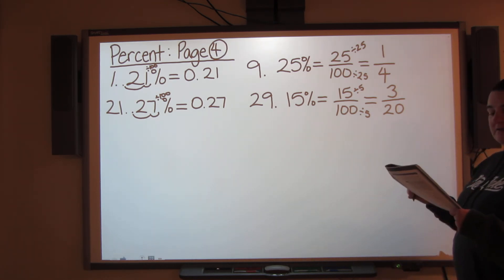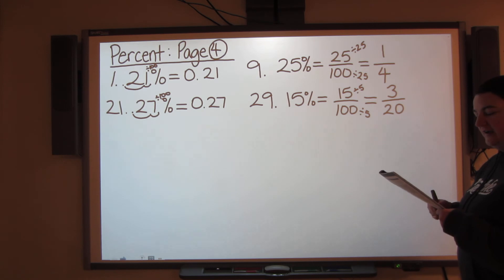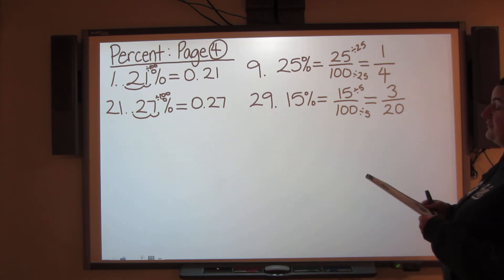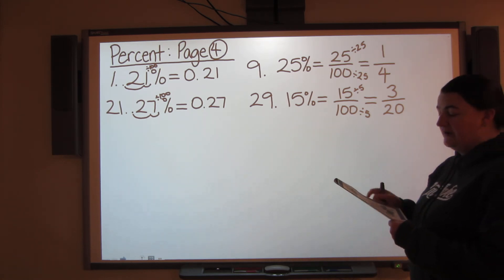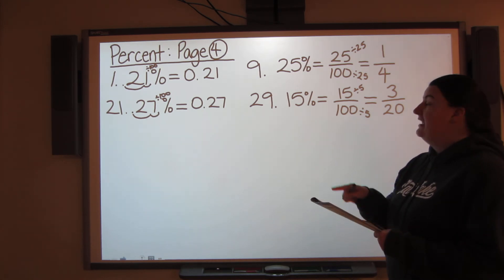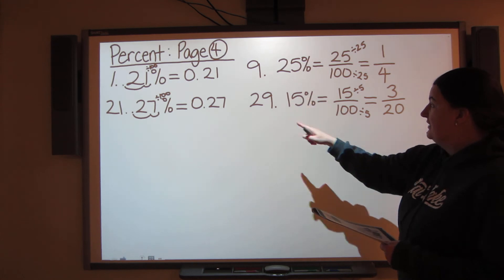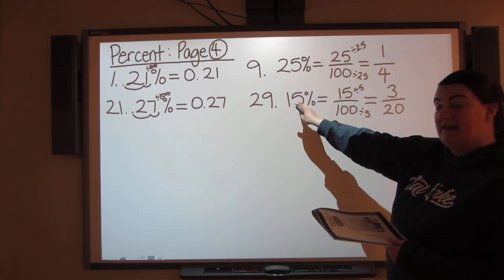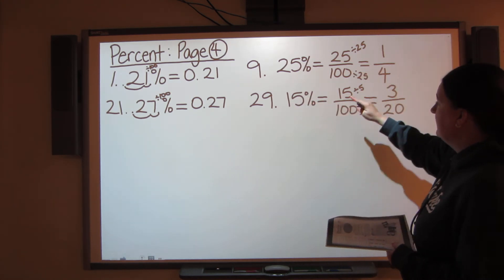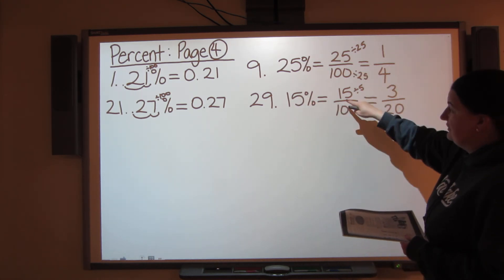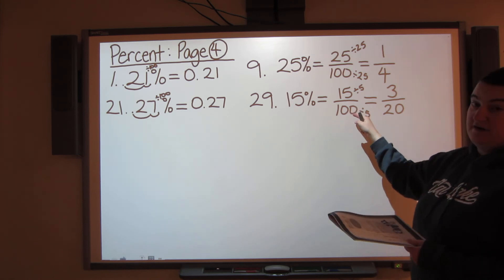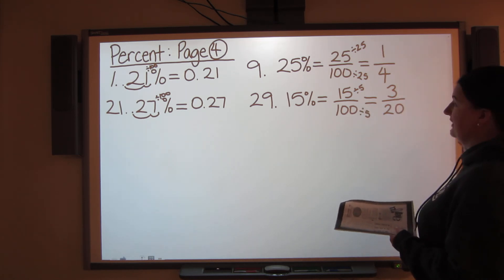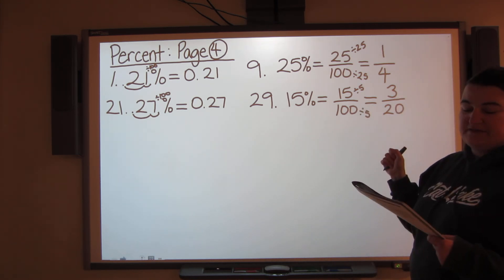So from number 29 all the way to number 40, this is how you're going to do it. You're going to take your percent, put it as your new numerator with your denominator of 100, and then find lowest terms.